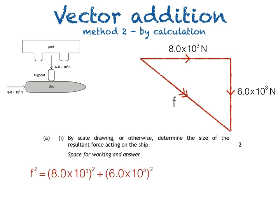So F² = (8.0 × 10³)² + (6.0 × 10³)². We can then take the square root of both sides, which gives us a resultant force of 1.0 × 10⁴ N.